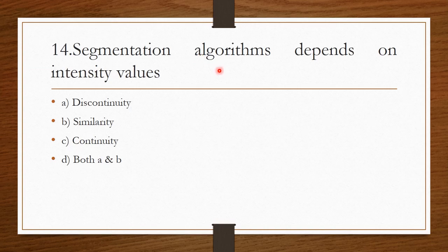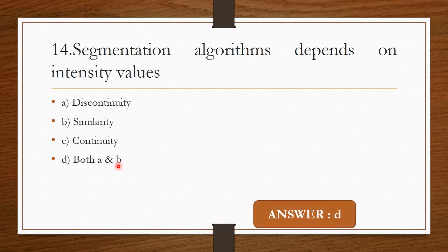Question 13: Segmentation algorithms depend on intensity values — Option A: Discontinuity. Option B: Similarity. Option C: Continuity. Option D: Both A and B. The correct answer is Option D — both discontinuity and similarity.